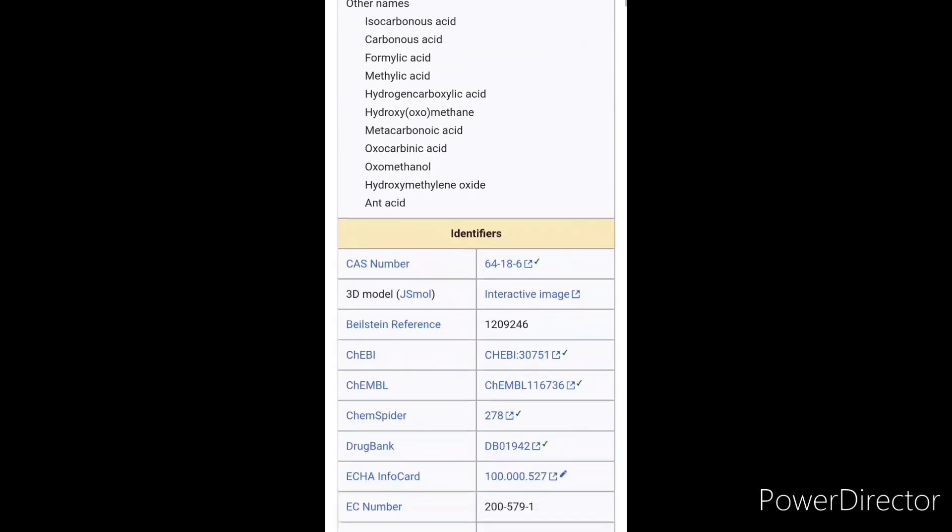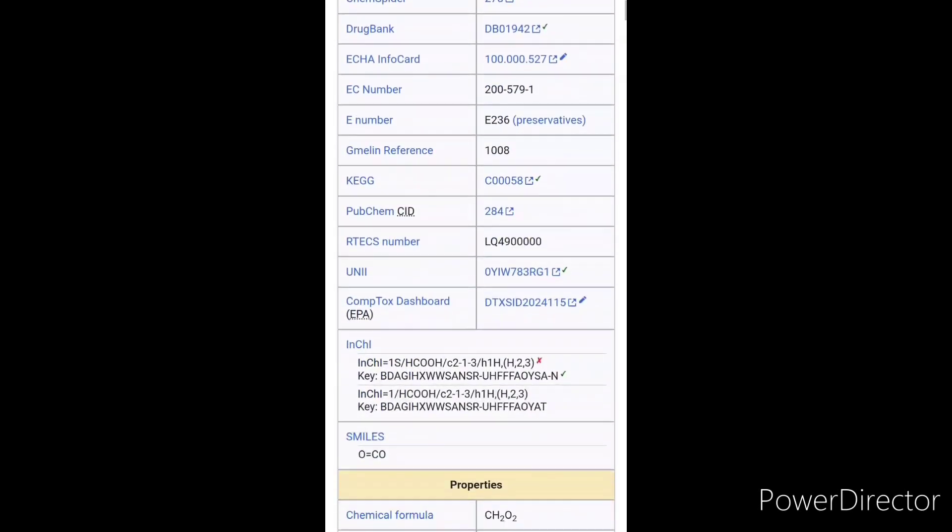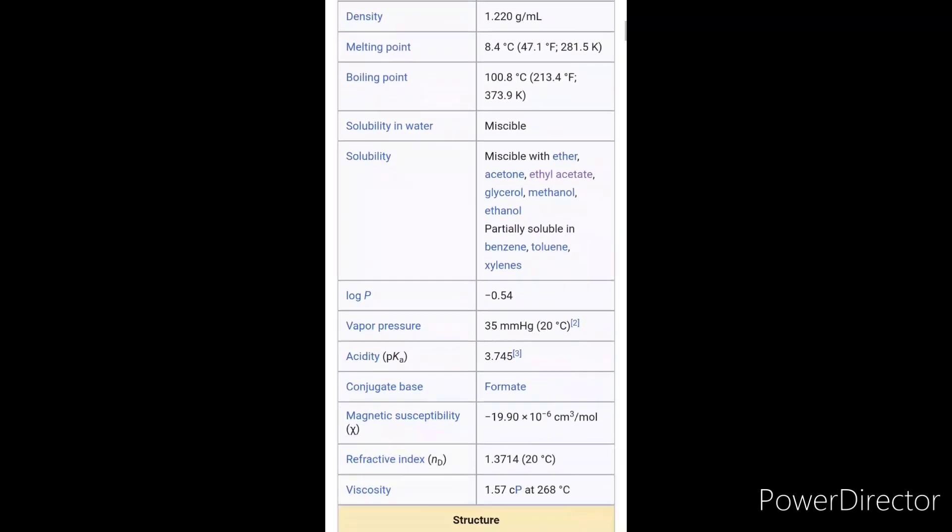First, what is formic acid? Formic acid is the simplest and strongest carboxylic acid with the formula CH2O2. We now make it all over the world since it's a useful chemical.